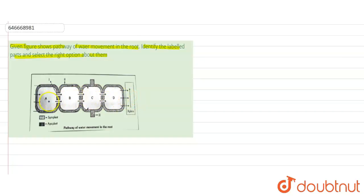The pathways are given and some parts of this conduction are given. Part A basically represents epidermis. Part B represents cortex. Part C represents endodermis. Part D represents pericycle.